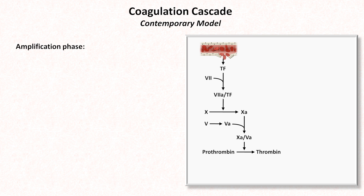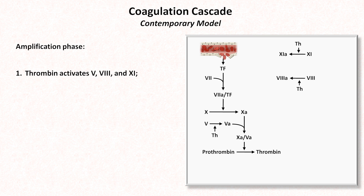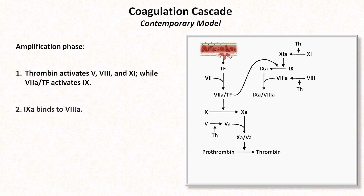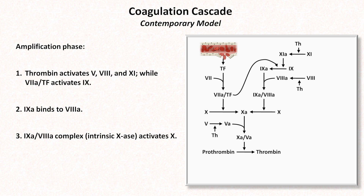For this, there is the amplification phase. The limited amount of thrombin produced so far activates more factor 5, as well as factor 8 and 11, while the 7a–tissue factor complex, as well as activated factor 11, is able to activate factor 9. Activated factor 9 binds to activated factor 8, which then forms the intrinsic factor tenase, thus activating factor 10. The amplification effect at each step is such that the intrinsic tenase ends up activating as much as 100 times the factor 10 that is activated by the extrinsic tenase.